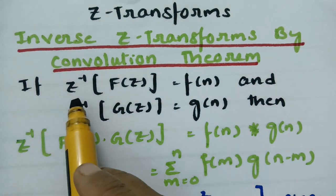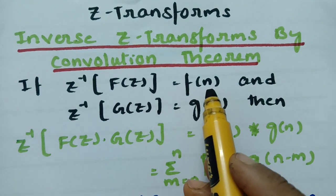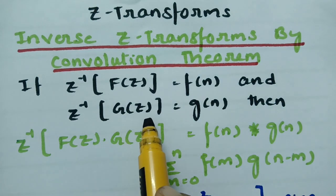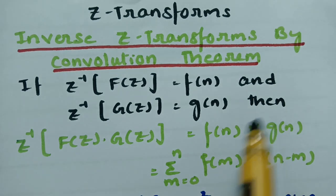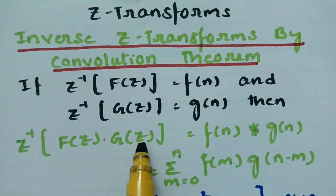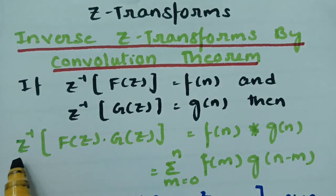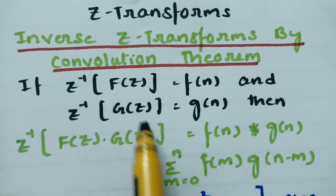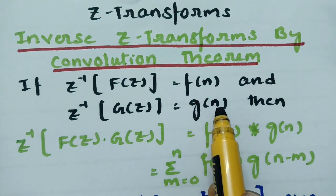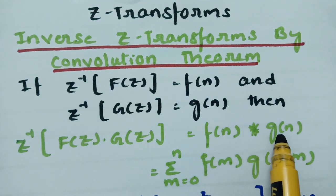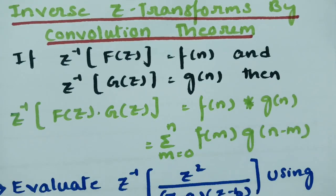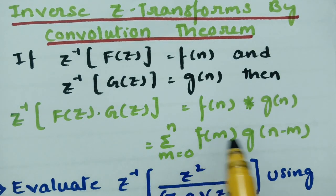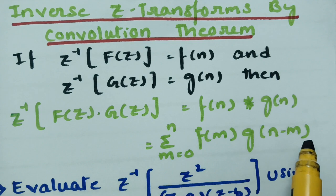If Z inverse of capital F of Z is equal to F of n, and Z inverse of capital G of Z is equal to G of n, then the convolution between the two functions — that is Z inverse of F of Z dot G of Z — is equal to F of n convolved with G of n, which can be written as sigma m equals 0 to n, F of m into G of n minus m.